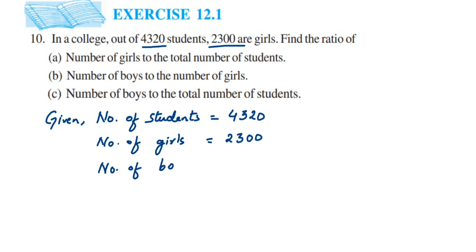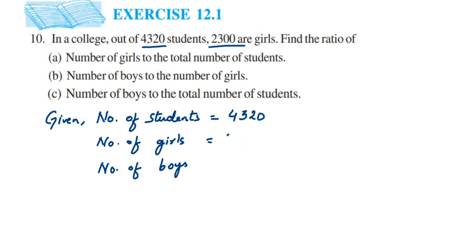We also need to find the number of boys, since we are asking for ratios involving boys. The number of boys will be 4320 minus 2300, which equals 2020. So 2300 are girls and 2020 are boys.